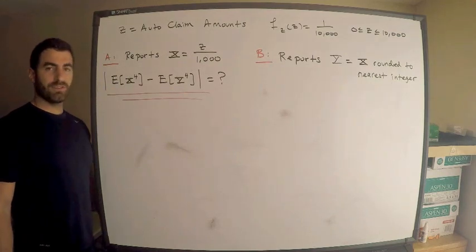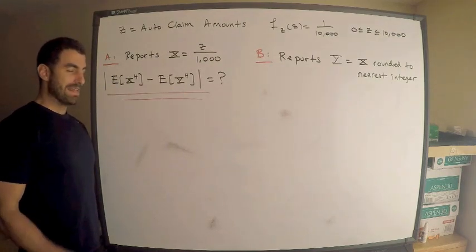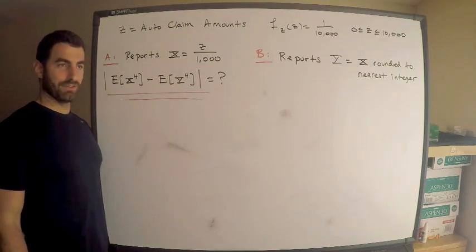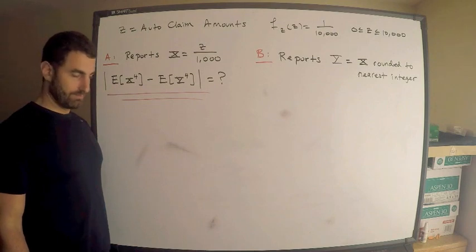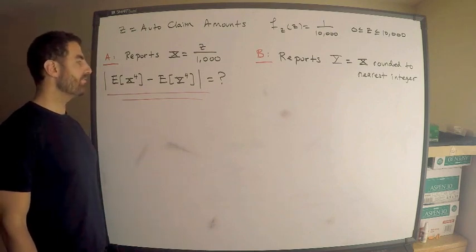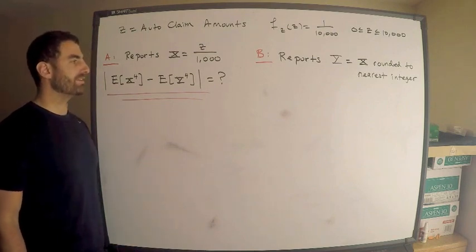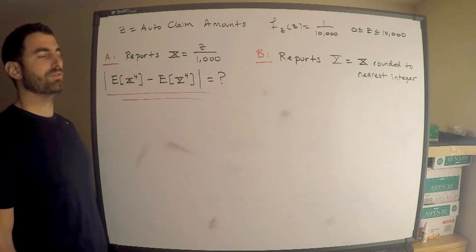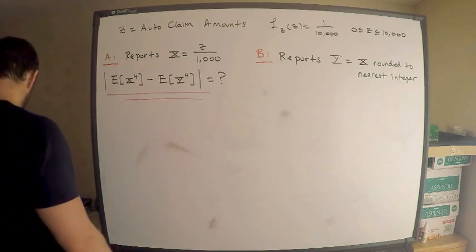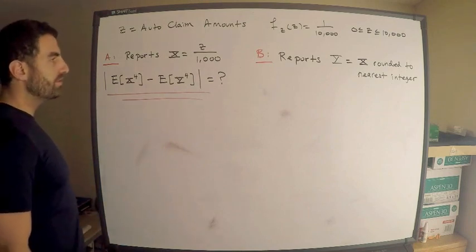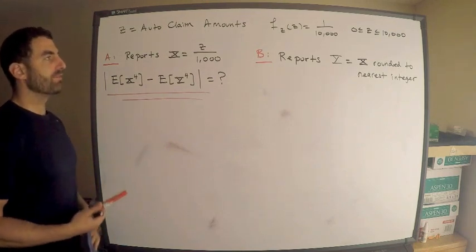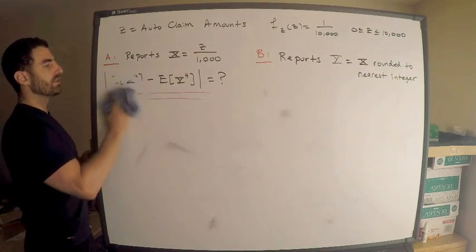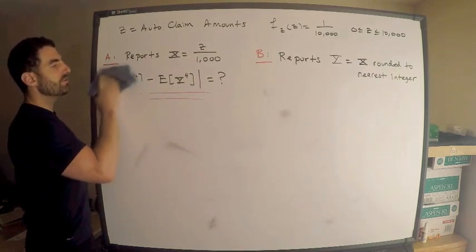We're after the absolute value of the difference between the fourth moment of X and the fourth moment of Y — so strange business. I want to compute the fourth moment of X first, so let's do that.